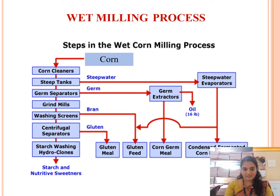The next one is the wet milling process. The steps are: corn is collected from cultivation centers, then corn cleaning, steep tanks, germ separation for removal of the germ, grinding mills, washing screens for removing bran, centrifugal separator for separating gluten from the corn, and starch washing using hydrocyclone series for removing starch. The removed corn germ is used in value-added processing.